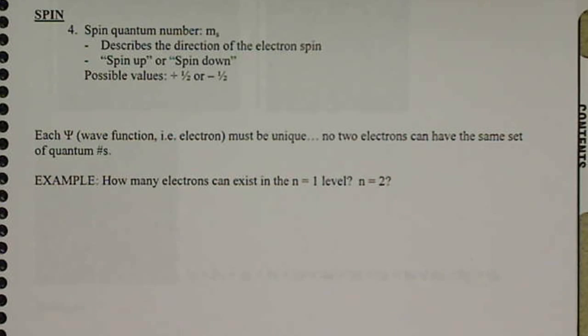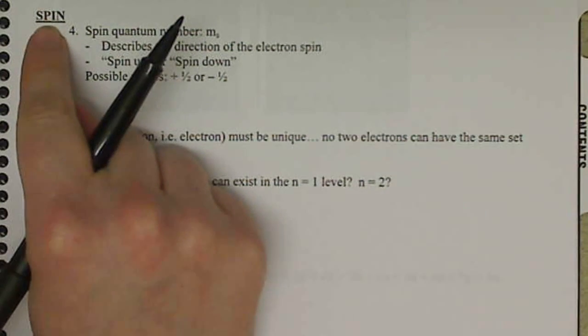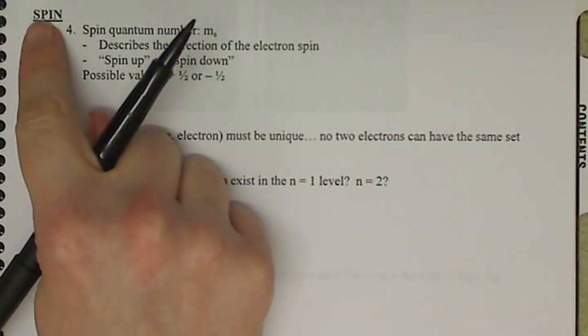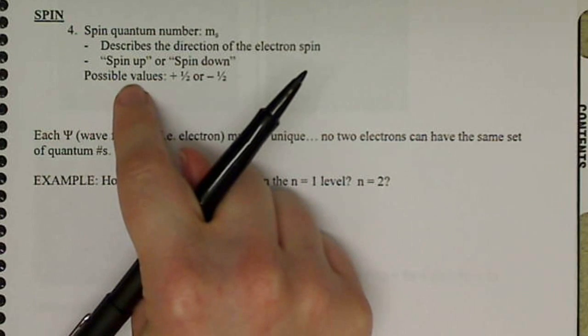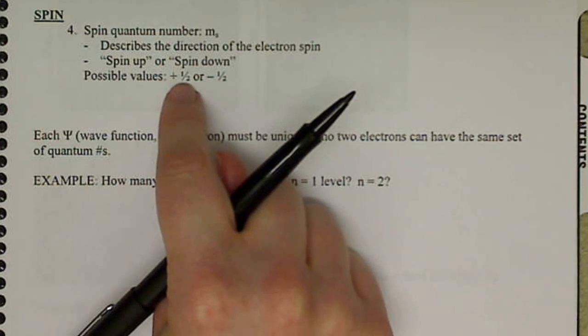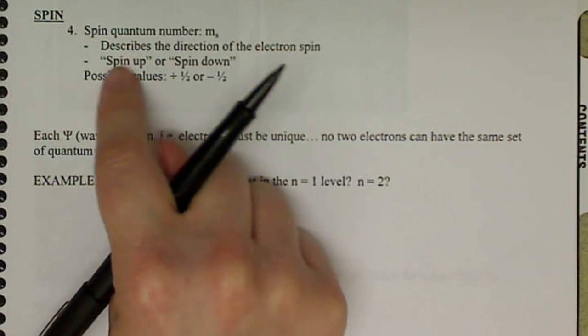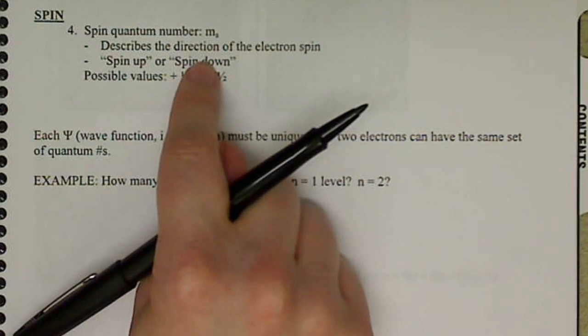For our fourth quantum number that represents the spin of the electron, one thing about the spin which is interesting compared to the other three quantum numbers is that the spin number doesn't depend on anything. It only has the possible values of plus 1 half or negative 1 half. And these correspond to what we call spin up versus spin down.